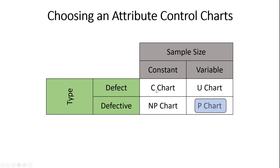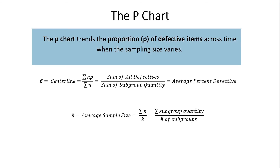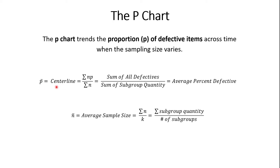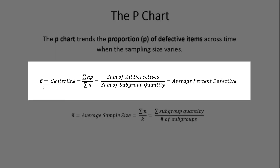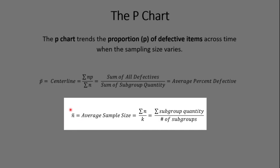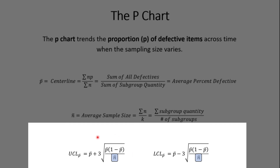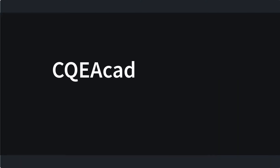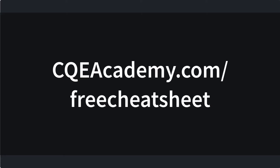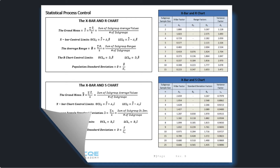Now let's talk about the P chart — used when trending defective items with a variable sample size. There are two parameters to calculate: P bar, which is the same calculation as with the NP chart, and N bar, the average sample size. Here's how we calculate the upper and lower control limits for the P chart. By the way, if you want all of these equations, I have a free cheat sheet at cqeacademy.com/freecheatsheet. It has all the equations you'll need on the CQE exam and will save you a ton of time.